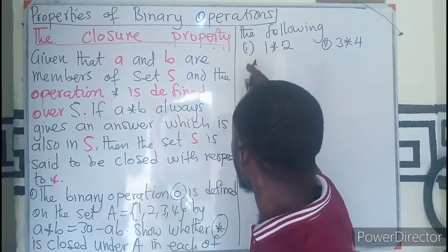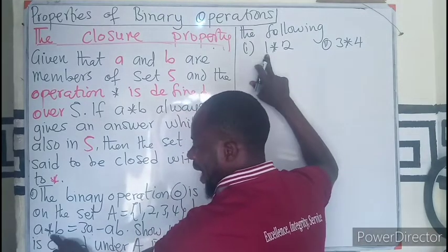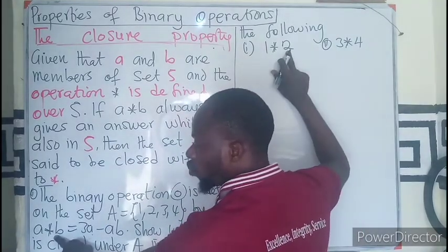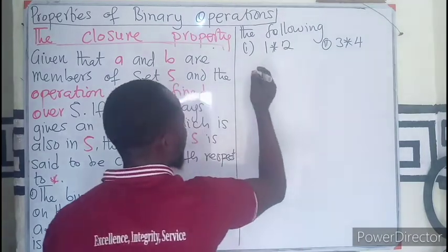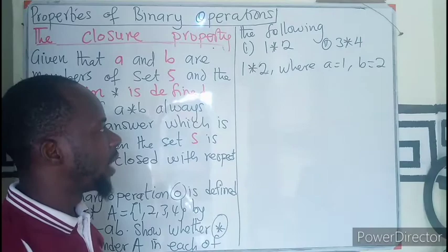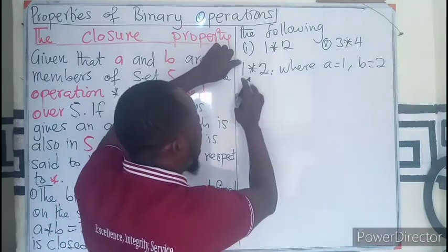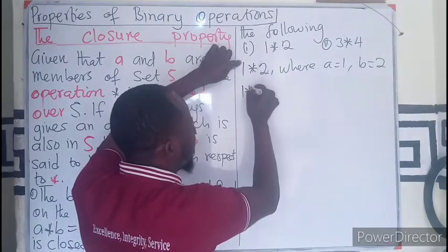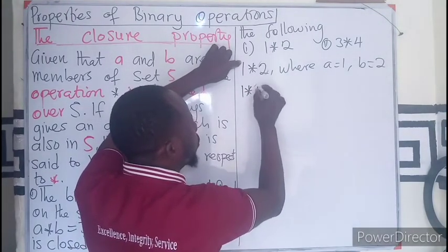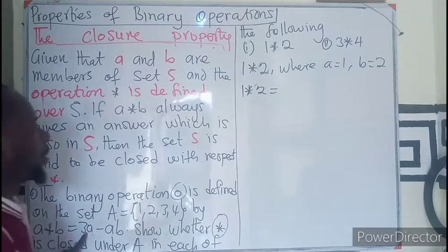If A is taking the position of 1 and B is taking the position of 2, we are going to replace A and B with 1 and 2. So in this case, we have 1 star 2 equals, the first term multiplying 3.